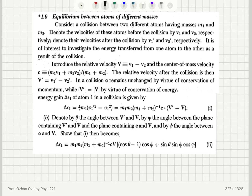We have shown in part A that the energy gain of the first atom is given by expression I. Now in part B, we denote by theta the angle between V' and V, by phi the angle between the plane containing V' and V and the plane containing C and V, and by psi the angle between C and V. We show that I then becomes this new expression.